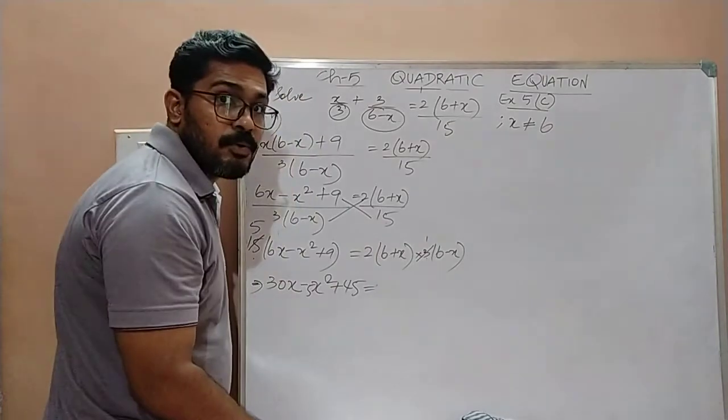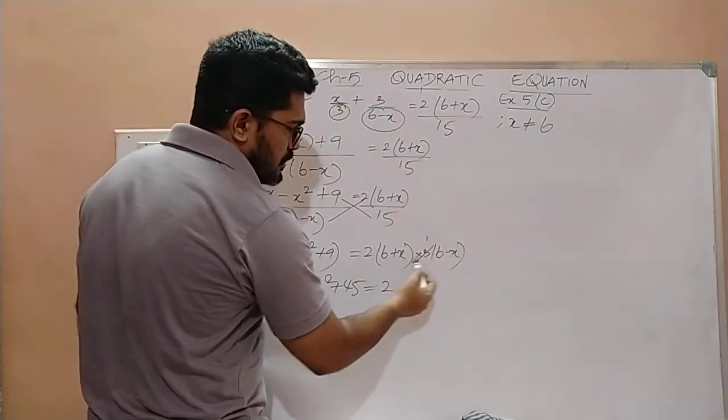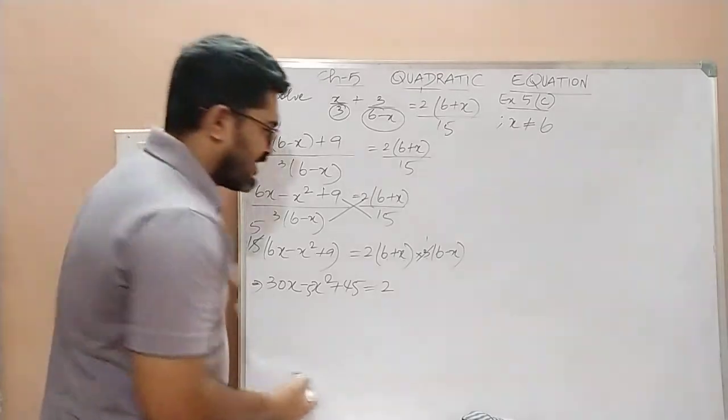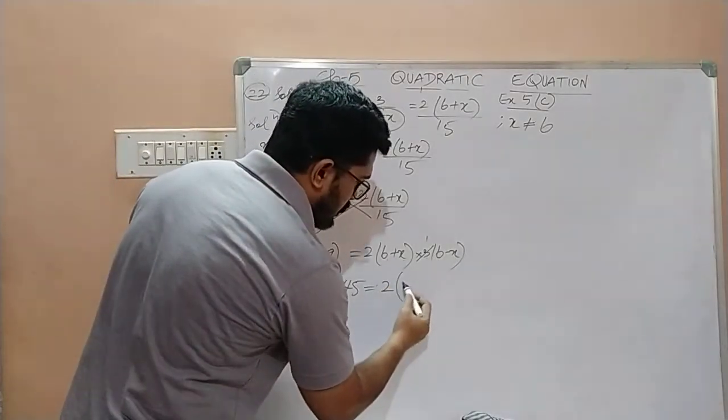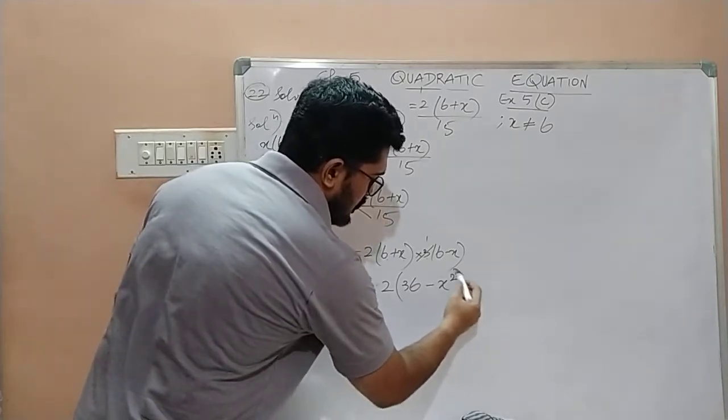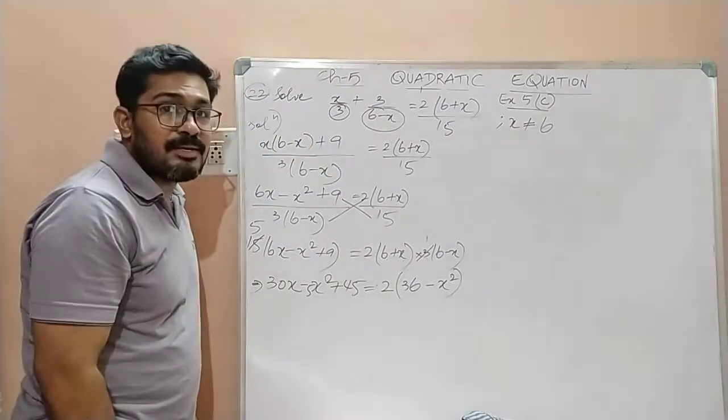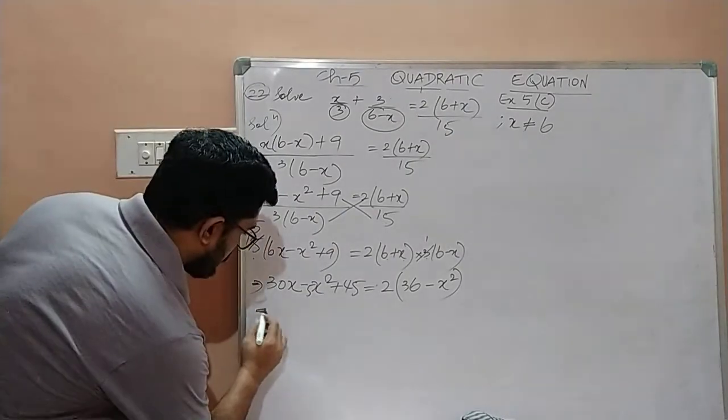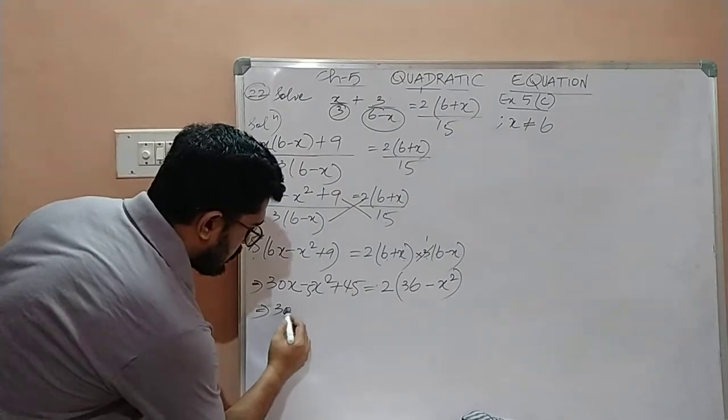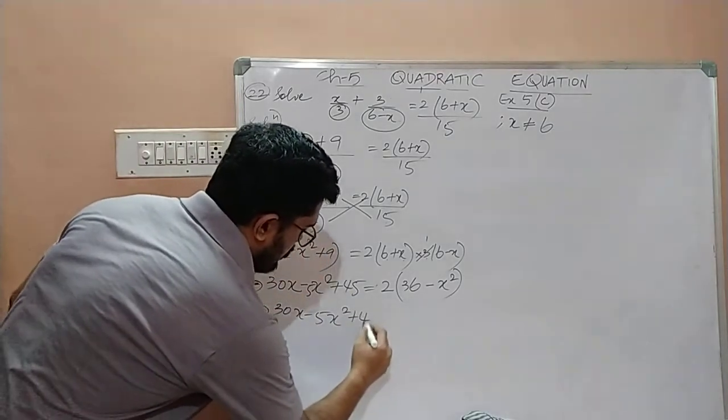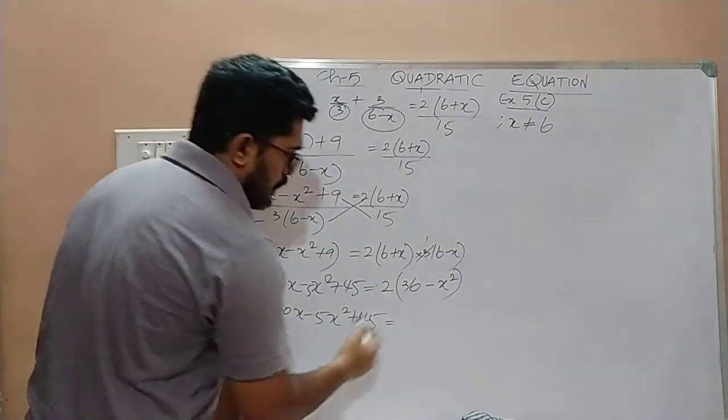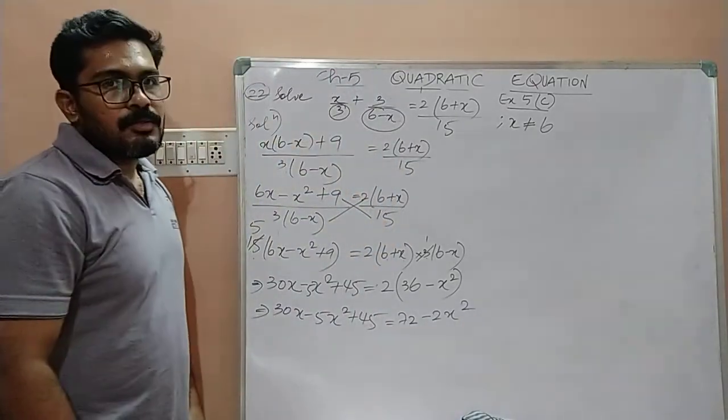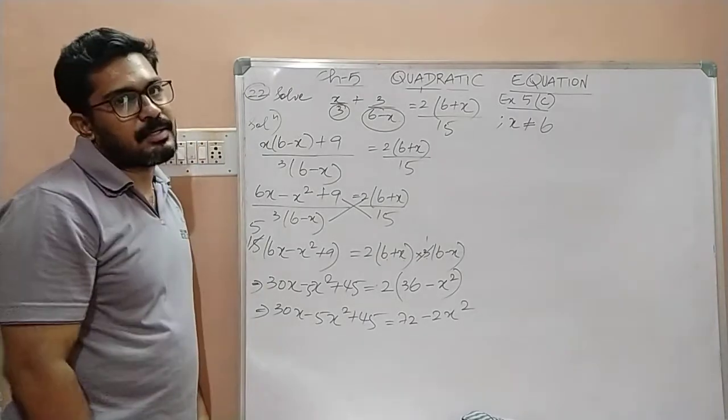Which is equal to? Now, children, 3 is already cancelled. Now, here 2 is there. Now, children, what is 6 plus x into 6 minus x? This is of the form a plus b into a minus b, which is a square minus b square. So, children, 6 plus x into 6 minus x will become 6 square which is 36 and x into x which is x square. So, it is 36 minus x square. 30x minus 5x square plus 45 is equal to what is 2 into 36? 72. What is 2 into x square? 2x square. So, whatever brackets we had till now, we have removed it.